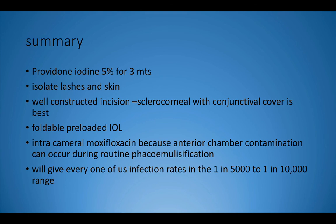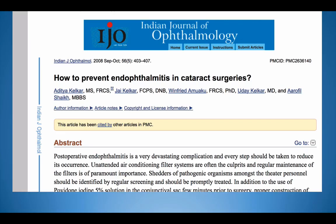In summary: povidone iodine with a contact time of 5 minutes should be instilled into the conjunctival sac. Use a good quality drape to isolate the lashes and skin from the surgical field. We must have a well-constructed incision — consider using a sclerocorneal or posterior corneal incision with conjunctival cover. If possible, use a foldable preloaded intraocular lens. Please start using intracameral moxifloxacin, because anterior chamber contamination can occur during routine phacoemulsification. Following these steps, all of us can achieve an infection rate in the range of 1 in 5000 to 1 in 10000.